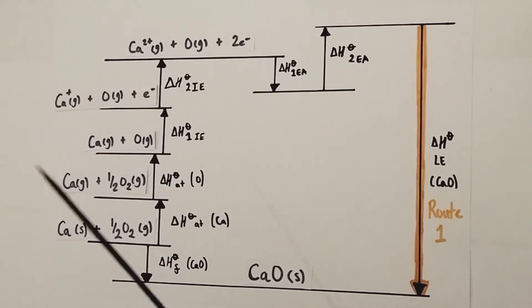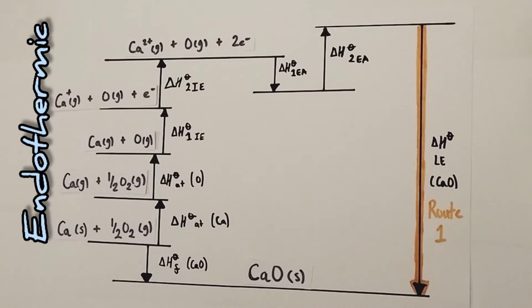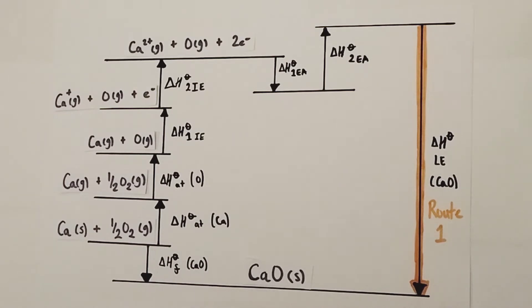So you may have noticed that all of the enthalpy changes since formation are actually endothermic in nature. That makes sense because atomization is converting elements from the solid state into the gaseous state. That's overcoming attractions, and that's going to require energy. Similarly, the first and second ionization energies are trying to remove electrons from the calcium atoms. That means putting in energy to overcome attractions between the electrons and the nucleus, which is positively charged. Therefore it's going to require energy as an endothermic process.